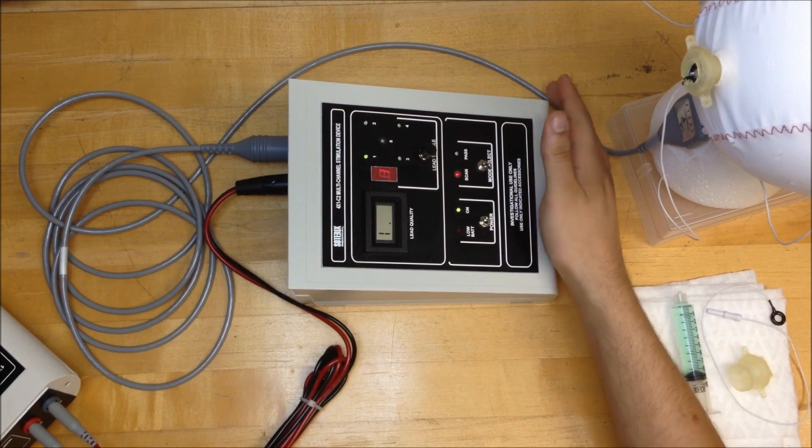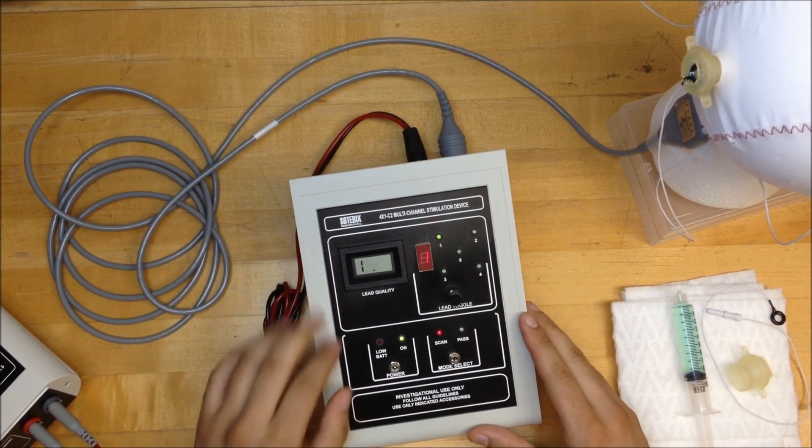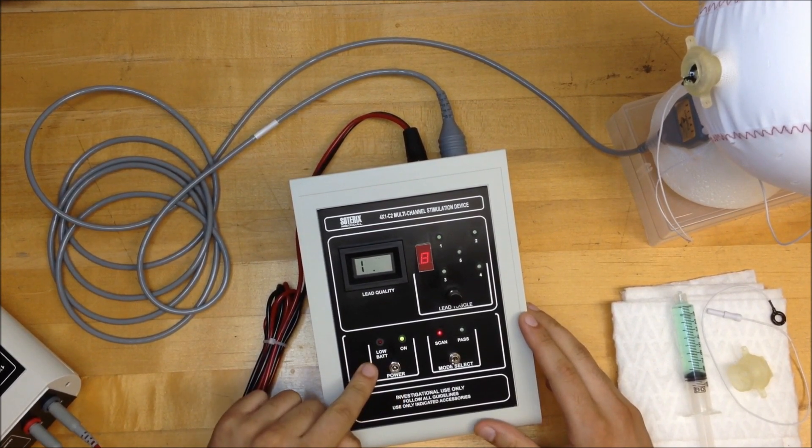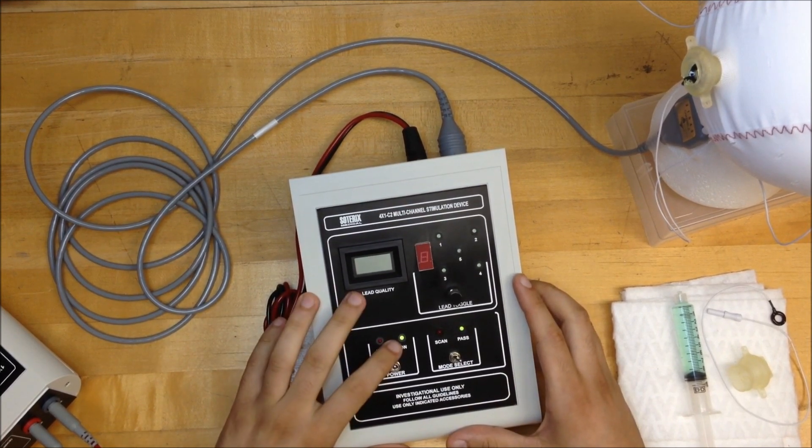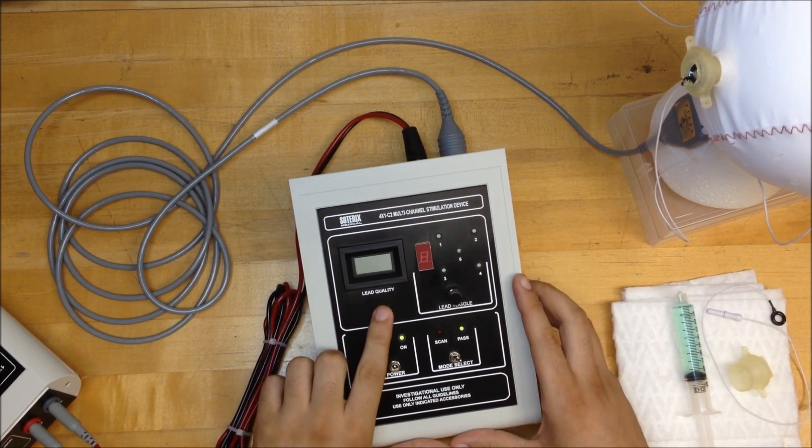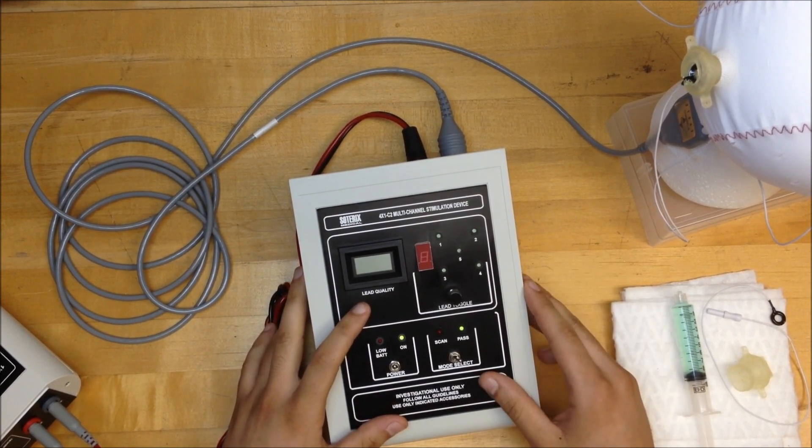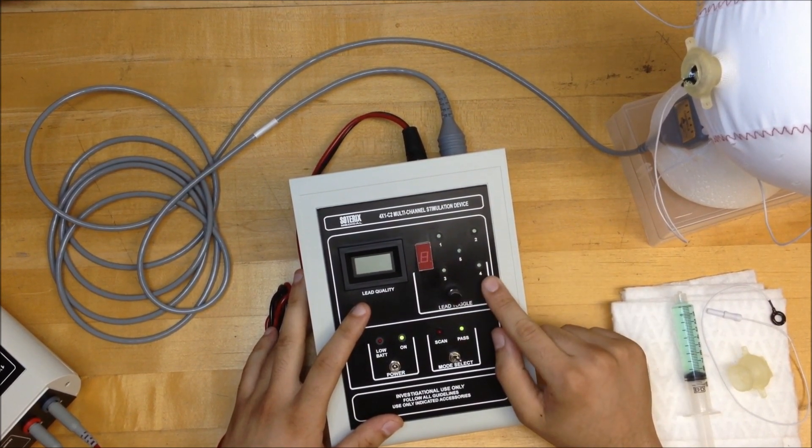Let me quickly show you the interface of the 4x1. Here you can see there is a power switch, a low battery indicator, an active or on indicator, and a lead quality or contact quality display that shows the contact of each channel. This also shows you the active channels.